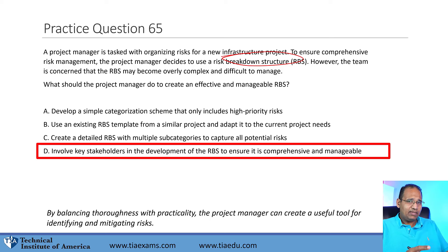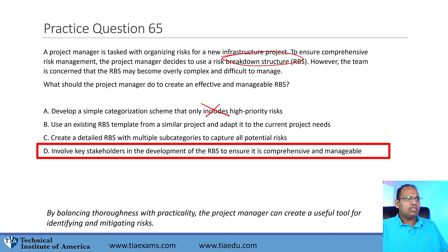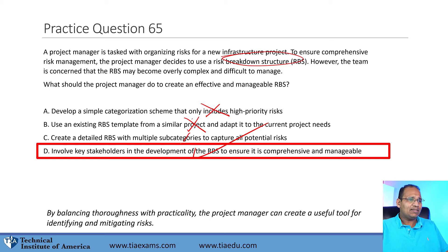Remember what an RBS does — it categorizes risks; the actual risks live in the risk register. Option A limits it to high-priority only, which is too narrow. Option B reuses an existing template, but every project is unique. Option C goes into detail, but the best approach is D — involve key stakeholders. The more people involved, including team members and subject matter experts, the more likely you'll build a comprehensive and manageable RBS.